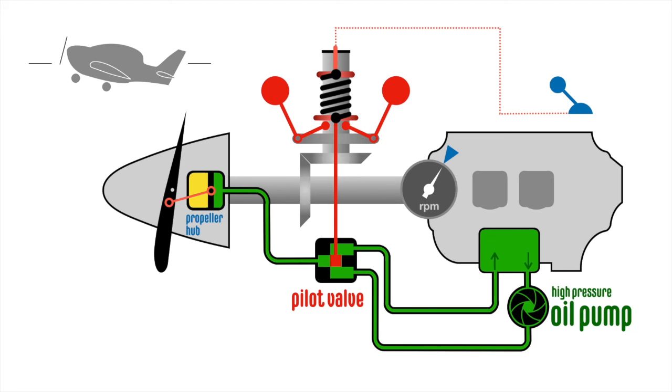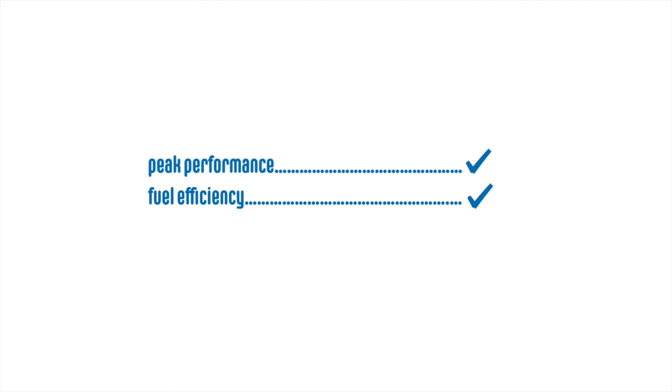The main benefit of the variable pitch propeller is that it provides peak performance at every phase of flight, from take-off to landing. The pilot can select the RPM that provides the most suitable power for any situation. This improves fuel efficiency and reduces strain on the engine.